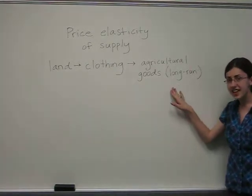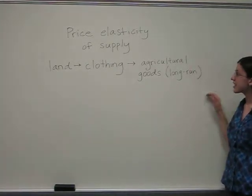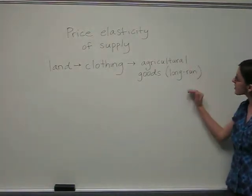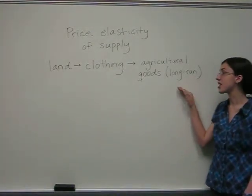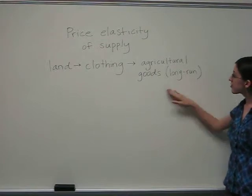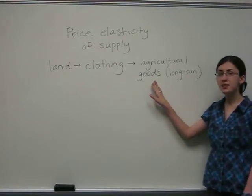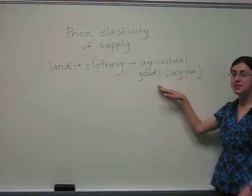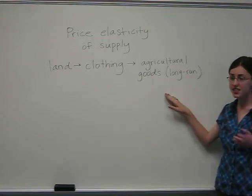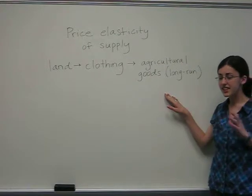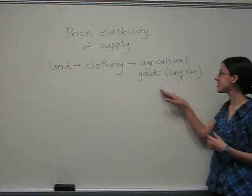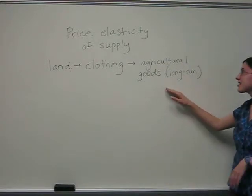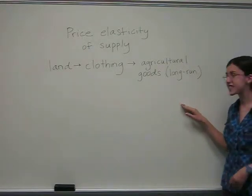For elastic goods in price elasticity of supply, we need to look at goods produced in the long run, because a farmer needs to have the time to change his or her fields so that they can contain new crops for which the prices have risen.